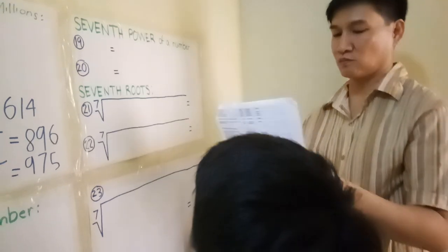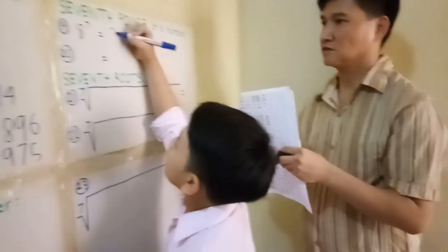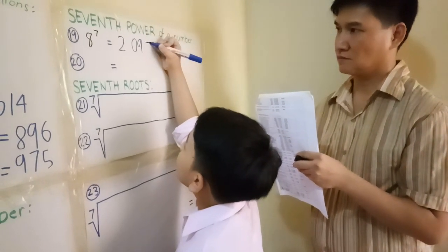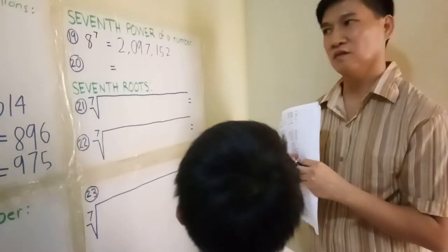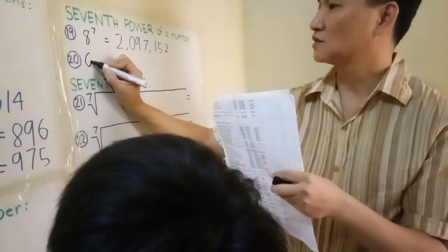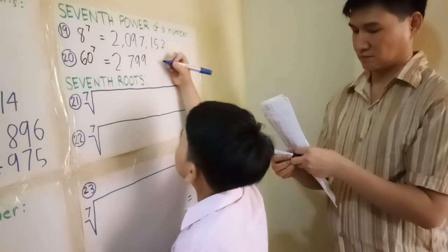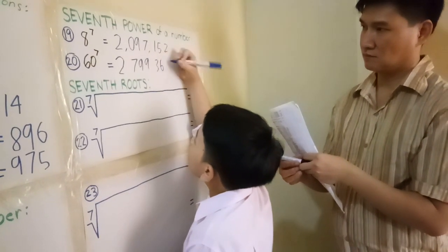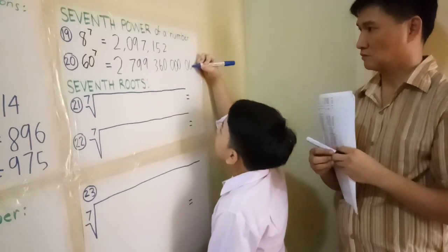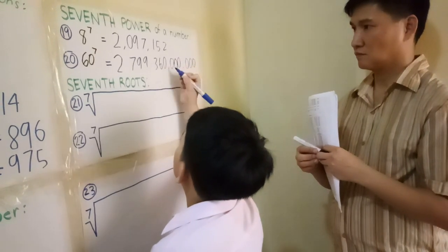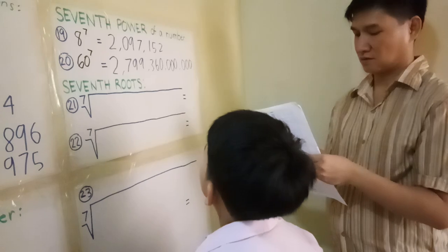7th power of a number — show us how big is 8 to the 7th power. 2,097,162. Big number — just 8 to the 7th! How about 16 to the 7th? 750,360 million. Bravo, good job.